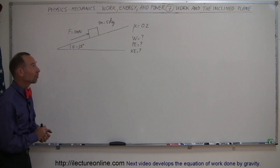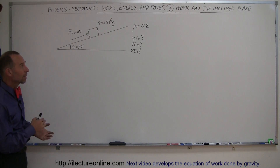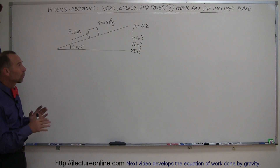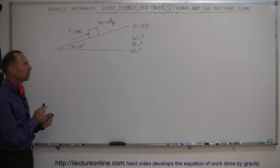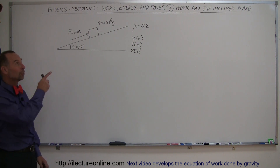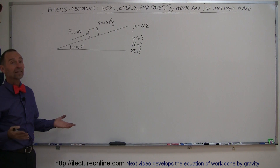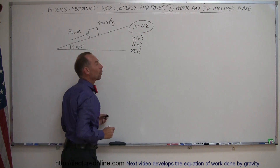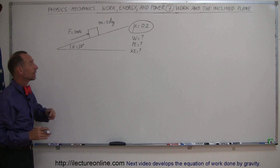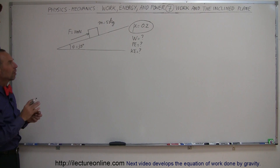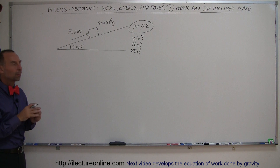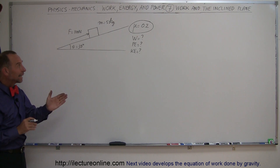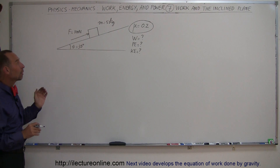Welcome to iLecture Online. In this next example of comparing work, kinetic, and potential energy, we're working with the inclined plane. This looks similar to video number six in this series, but the key difference is that here we also have friction — a coefficient of friction between the block and the inclined plane. This means some of the work performed on the object will be lost by overcoming friction.